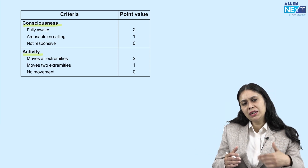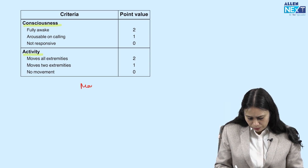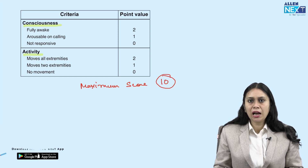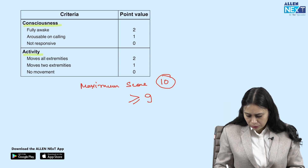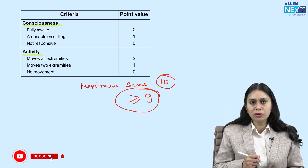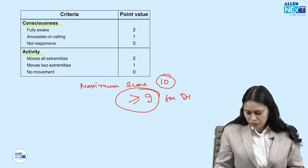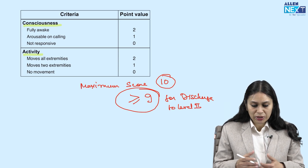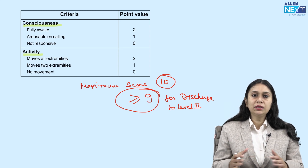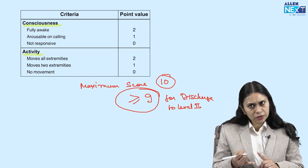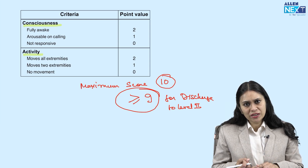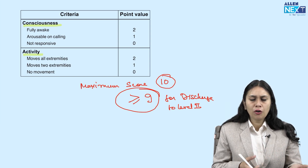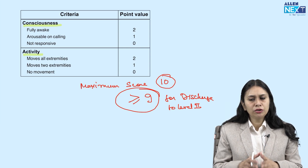Every parameter is scored 0, 1, or 2, so the maximum score is 10. The patient must have a score of more than or equal to 9 for discharge from PACU to level 2 care. So the important things to remember are the name, what discharge scoring system it is, what the parameters are, the maximum score, and the cutoff score for shifting from PACU to level 2 care.